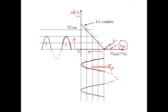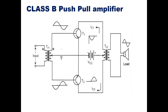If you want a complete cycle, you can use two transistors. In a Class B push-pull amplifier we use transistor T1 and T2 — both are NPN transistors. This is transistor T1 and this is transistor T2. The base of T1 and base of T2 are connected, and the input signal is applied to the primary of the transformer.